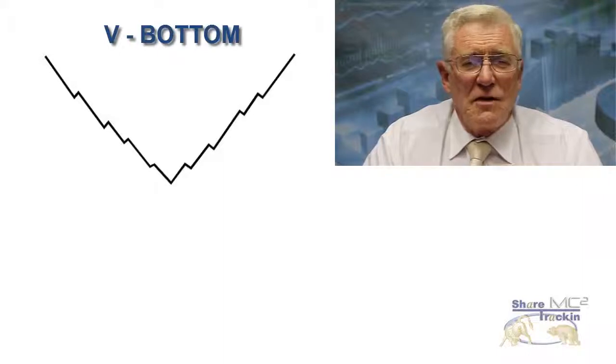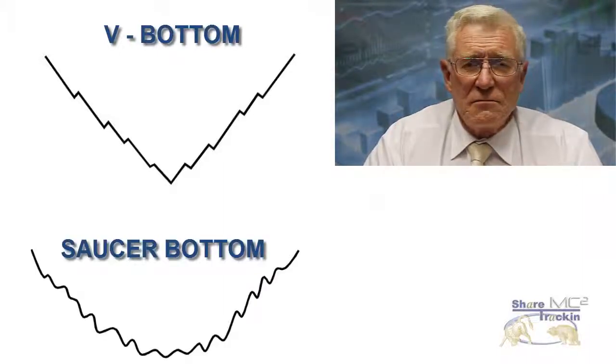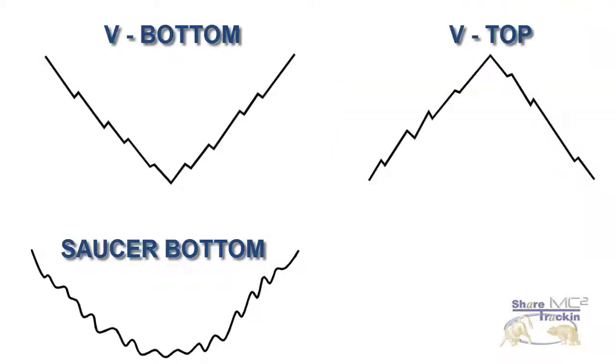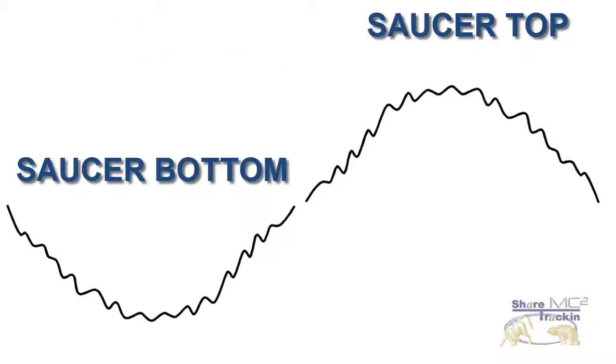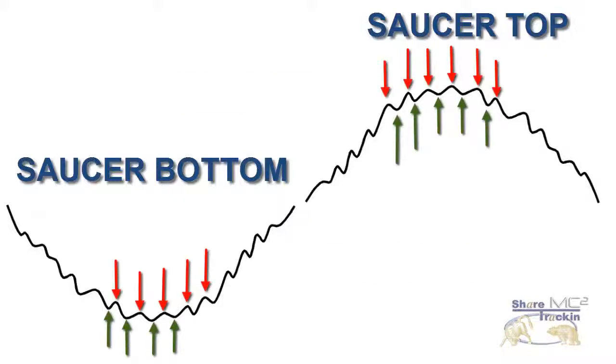The opposite of a V-bottom is a saucer bottom, and the opposite of a V-top is a saucer top. These formations are far more common. As you can see here in the diagram, sentiment shifts gradually in a saucer bottom or a saucer top, so that the bulls and the bears slowly change places. The negative sentiment slowly gives way to positive sentiment or vice versa.